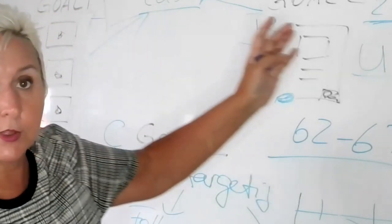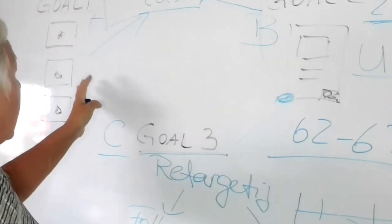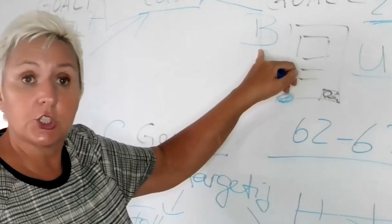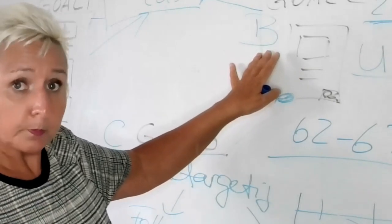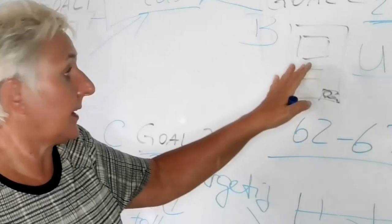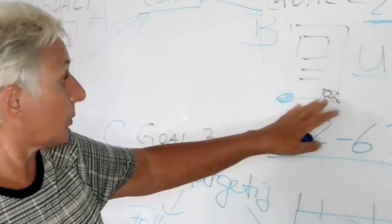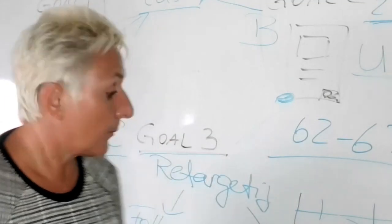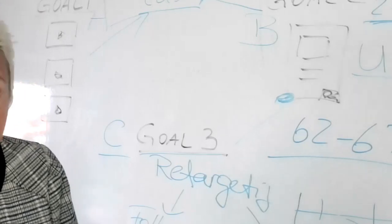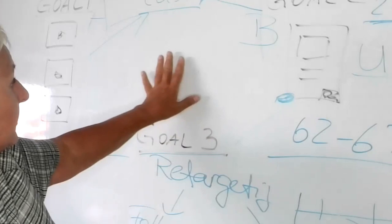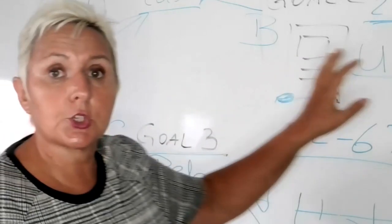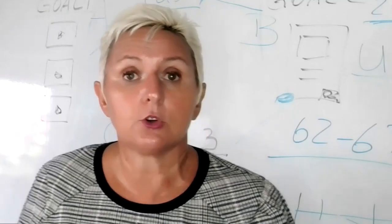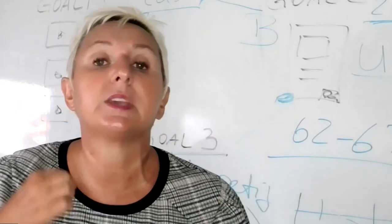Goal number one is to build awareness and attract the people we want to work with. Goal number two is to build relationships and build a list of people ready to buy or sell now, and also a list of people taking a little longer but whom we can follow up and nurture. Once they are in your online system, it's all built on one platform. It doesn't matter which one you use — Facebook, LinkedIn, TikTok — you can create this on every platform so that you stay top of mind and people don't forget about you.